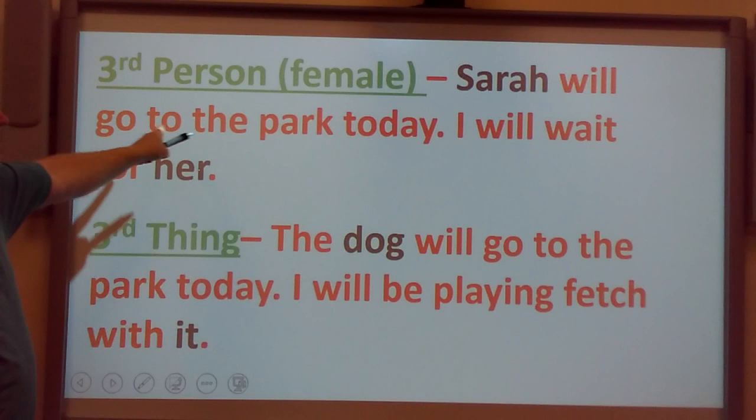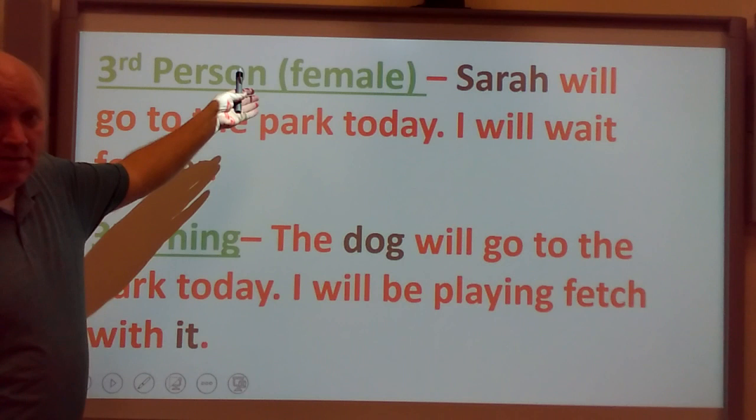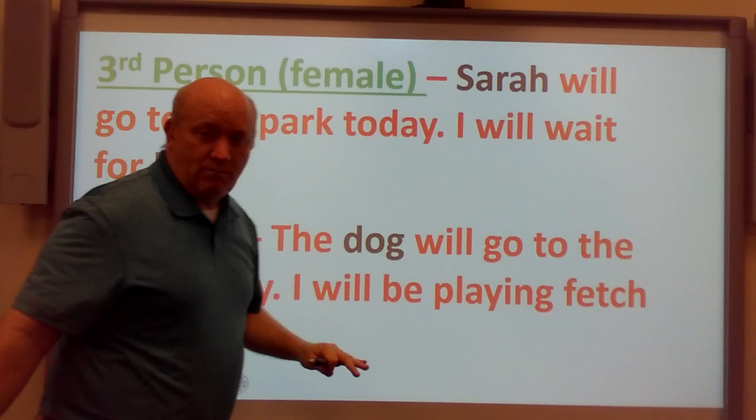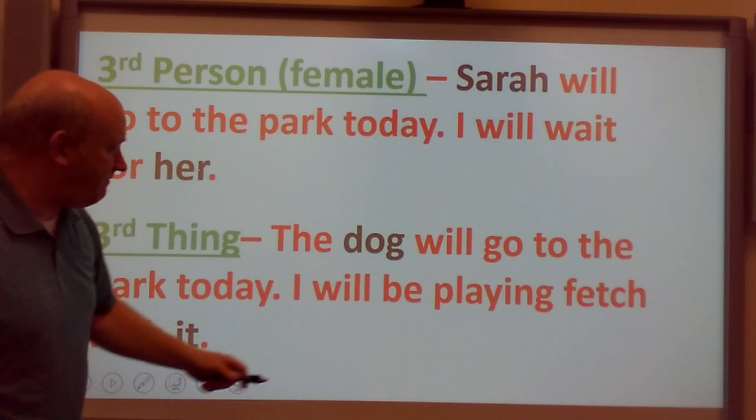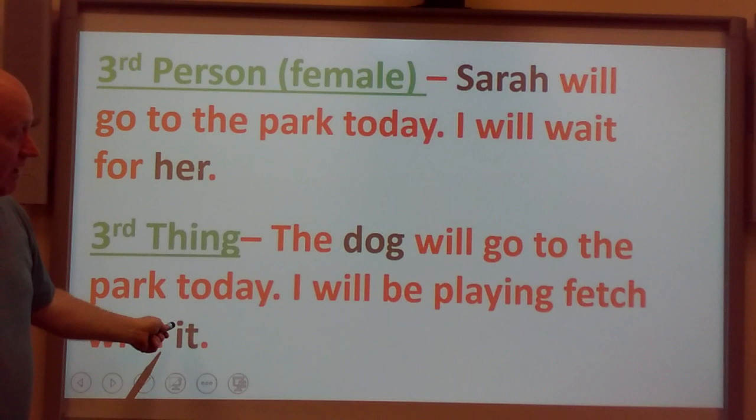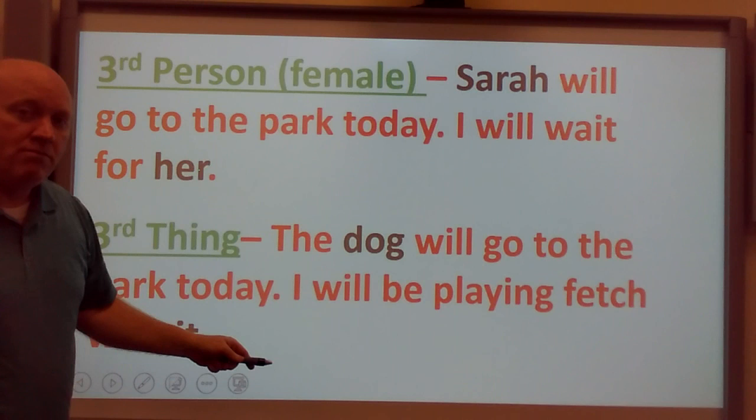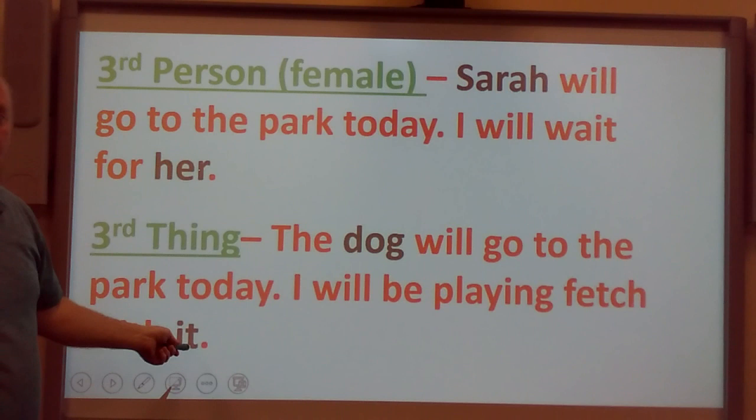Third person, female: 'Sarah will go to the park today. I will wait for her.' We're looking at the feminine pronoun — 'her' is a pronoun referring to Sarah, which is an object. Third thing: 'The dog will go to the park today. I will be playing fetch with it.' Since the dog doesn't have a name, I can't use 'him' or 'her' — I have to use 'it.'